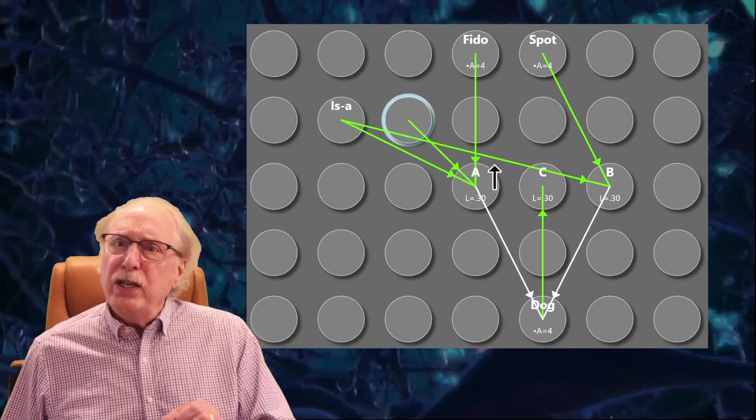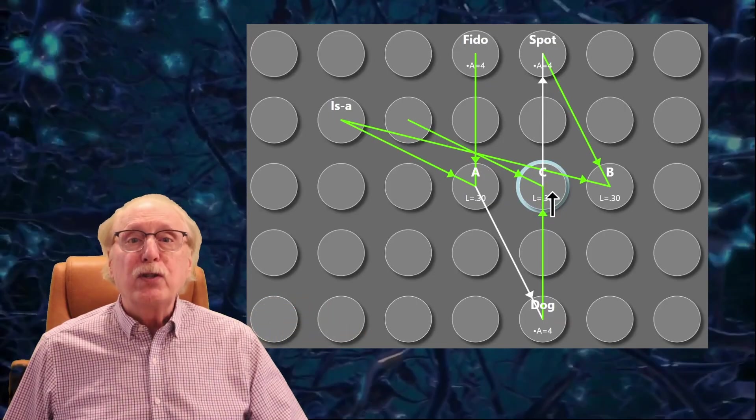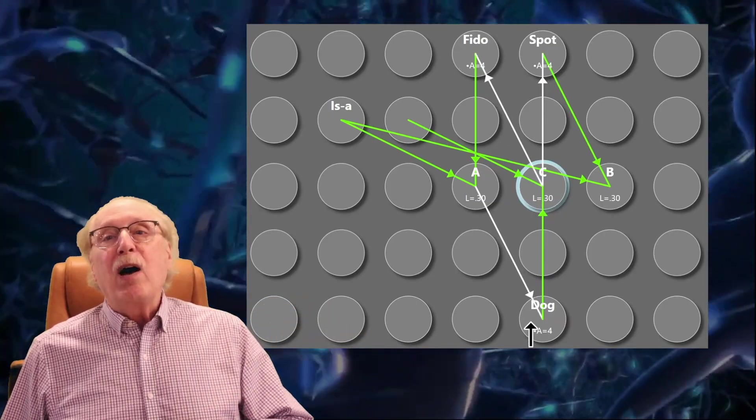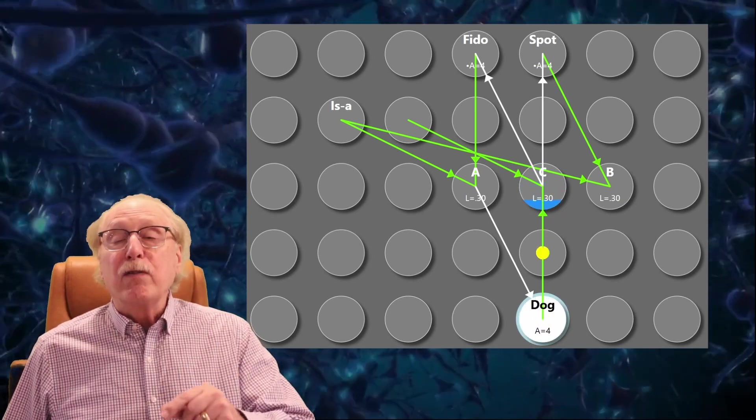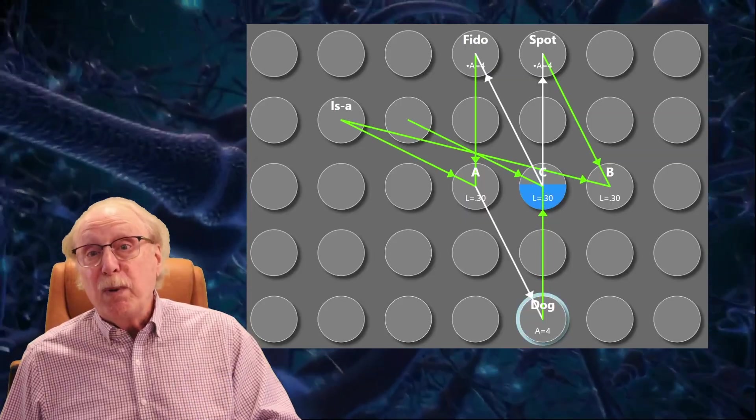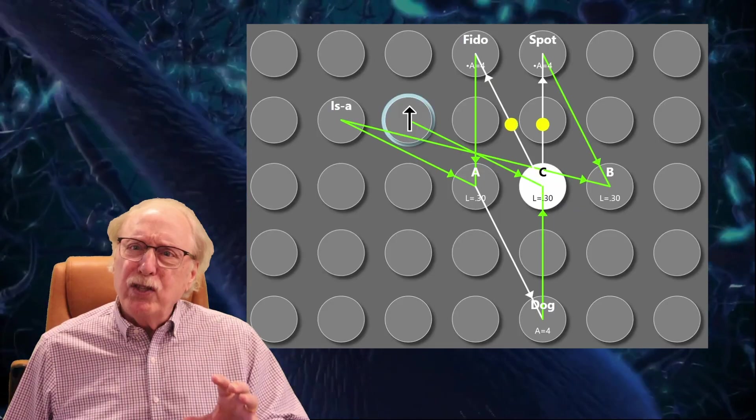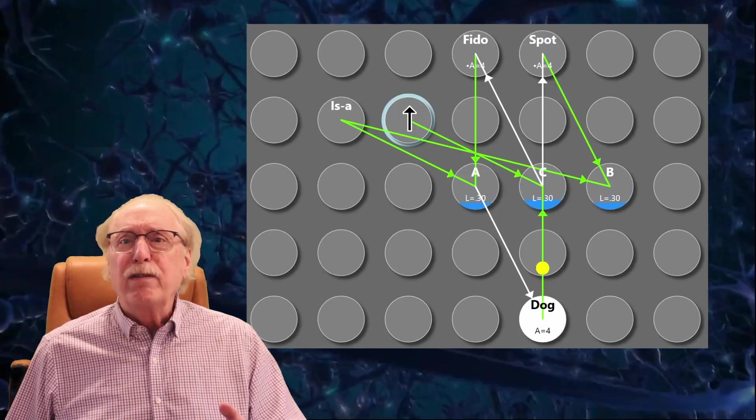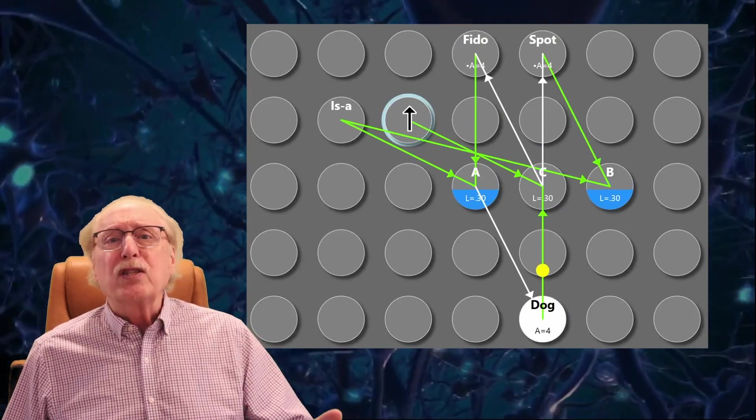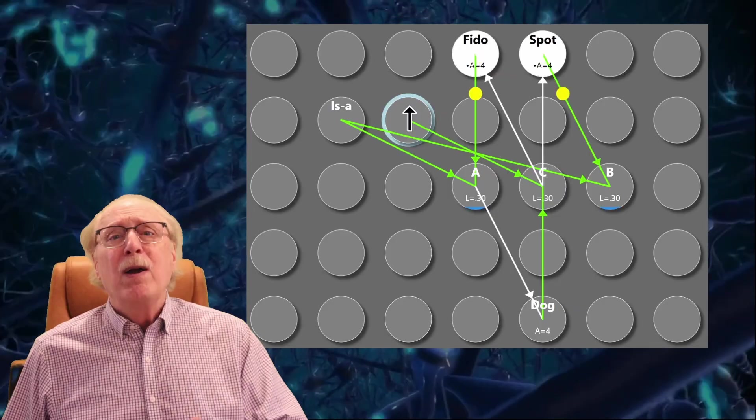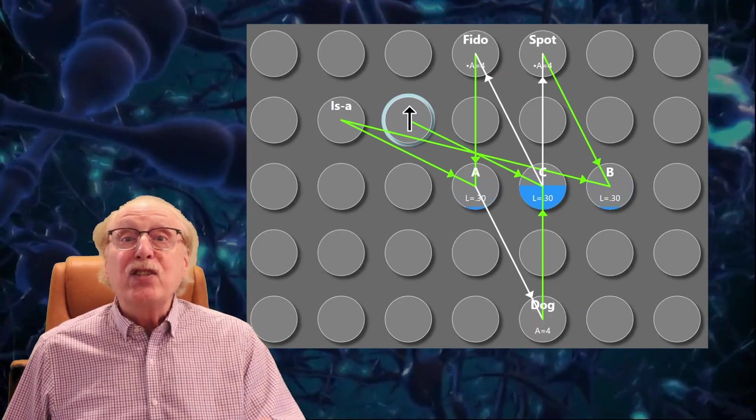And we'll also need to use a new relationship type, which will be the inverse of Iza. Now, with the dog neuron firing, I can fire my inverse relationship neuron and both Fido and Spot will fire. English doesn't have a simple phrase to represent the inverse of Iza. What it really means is that the set of dogs contains the members Spot and Fido, but that's too much of a mouthful, so we'll call it has instance for now.